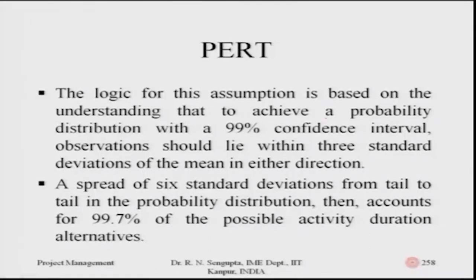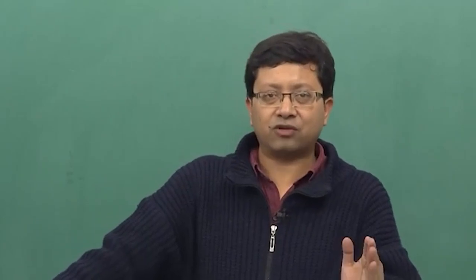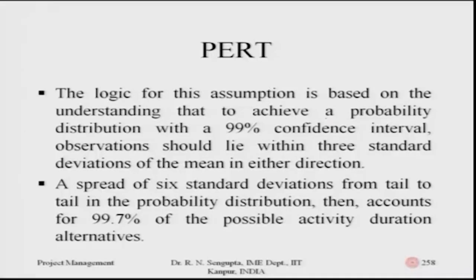The expected time formula is: optimistic plus pessimistic plus four times the most likely time, all divided by six, with probabilities of one-sixth, one-sixth, and four-sixths respectively. The logic is based on achieving a probability distribution with a ninety-nine percent confidence interval, where observations lie within three standard deviations of the mean. For a normal distribution, three sigma on each side covers ninety-nine point nine seven percent of the area.